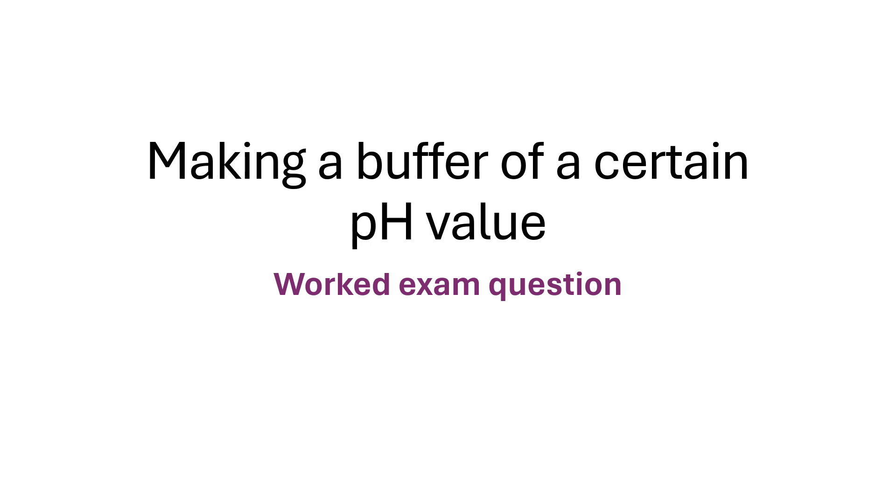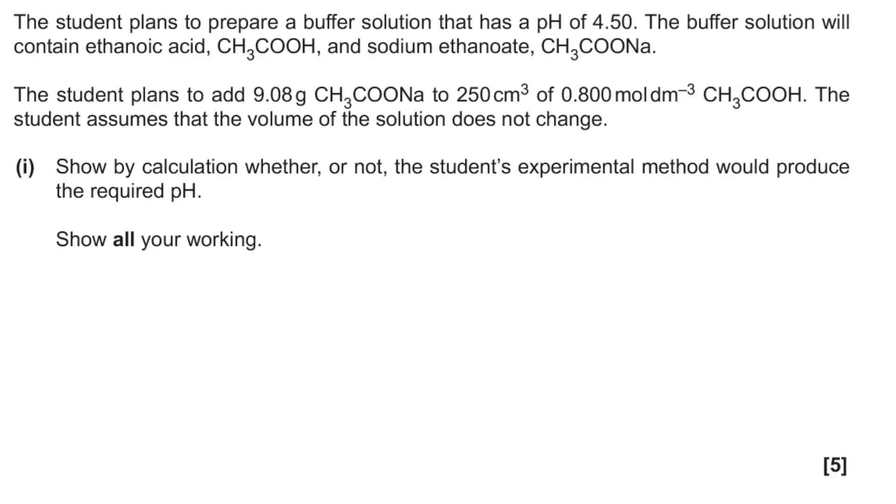Hello, welcome to this look at an exam question going through how to make a buffer of a certain pH value. The first thing to do is look at the fact that the buffer has to have a pH of 4.5, so that means you work out the hydrogen ion concentration by doing 10 to the minus pH, which gives us this value.